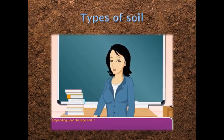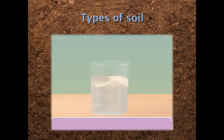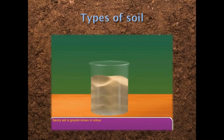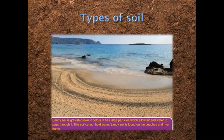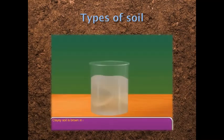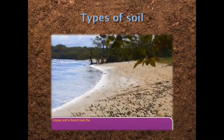Depending upon the type and amount of particles present in the soil, it is of three types: sandy soil, clayey soil, and loamy soil. Sandy soil is grayish brown in color. It has large particles which allow air and water to pass through it, but this soil cannot hold water. Sandy soil is found on beaches and river banks. Clay soil is brown in color. It has very fine particles which stick together and can hold a lot of water. Plants like rice that need a lot of water grow well in clay soil.